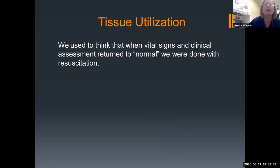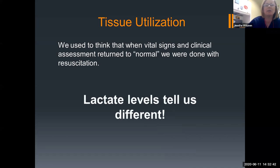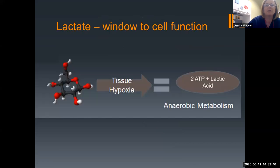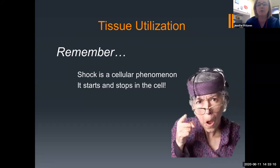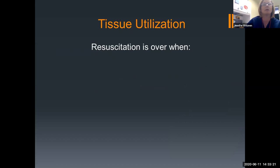We used to think that when vital signs and clinical assessment returned to normal, our patients were done. But your lactate, pH, and base deficit might tell us differently. Specifically, that lactate is a marker of anaerobic metabolism. If I have a high lactate level, it means I have tissue hypoxia — it's the only way to really get a high lactate level. As long as that lactate level stays high, then at the cellular level, our patients are still shocky, even though they may look fine with normal vital signs. Because shock starts and stops in the cell, just like we can't see it with signs and symptoms when it starts, we can't tell it's over until we look at some of those labs.